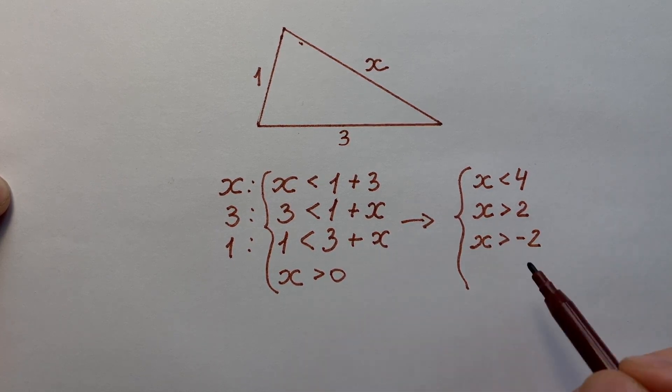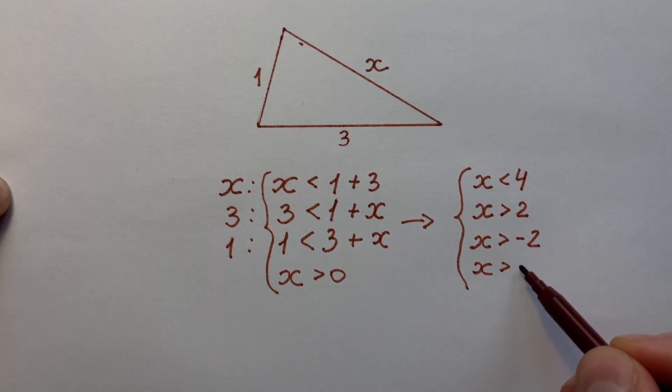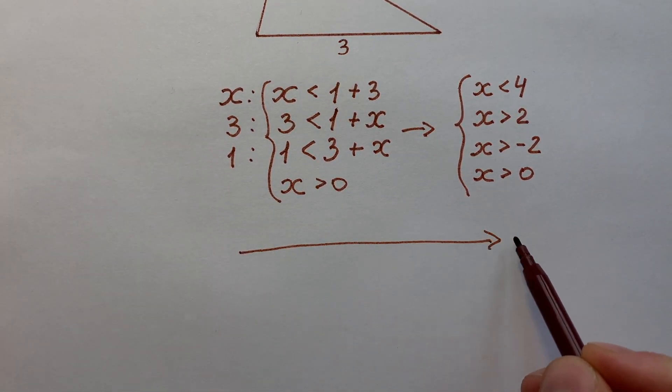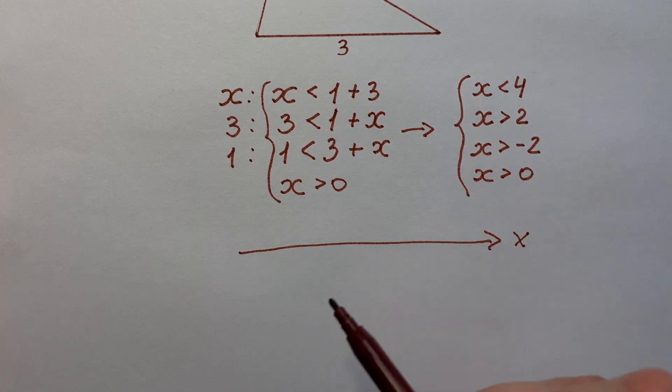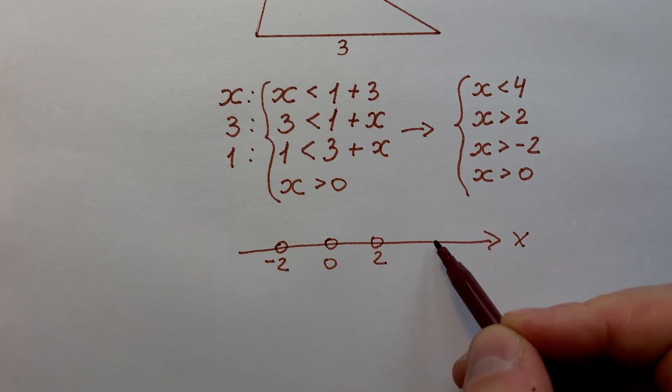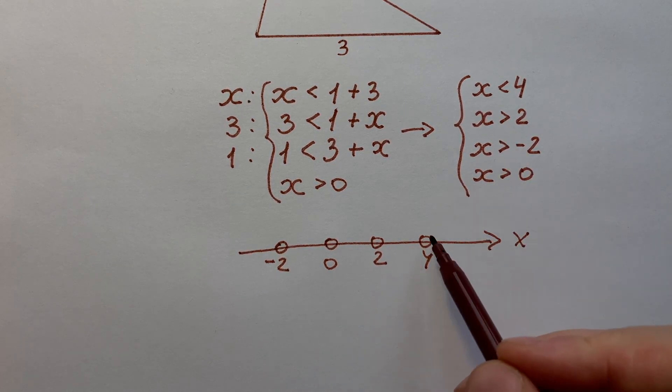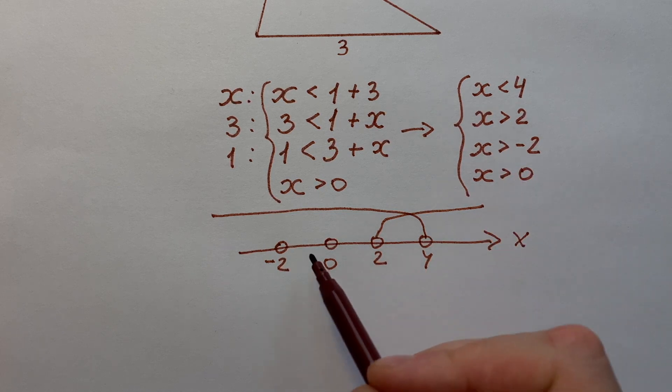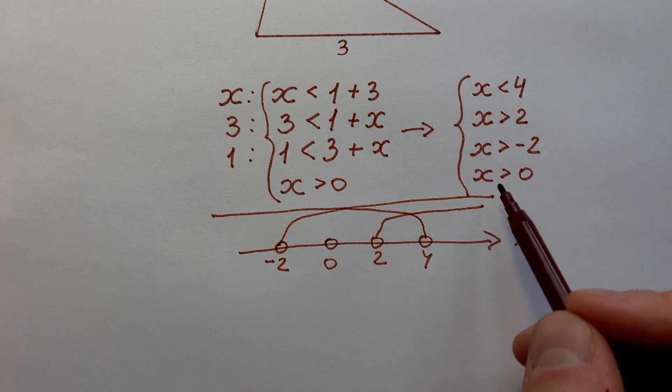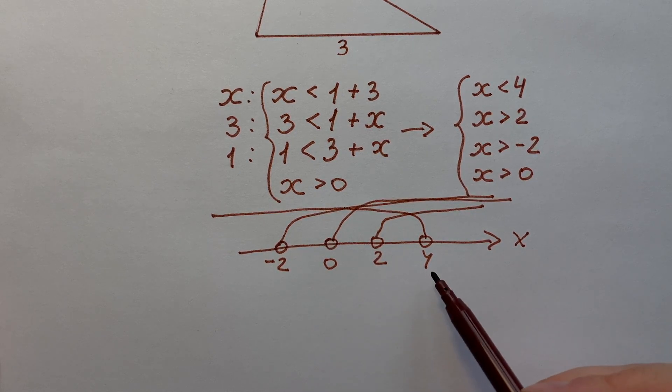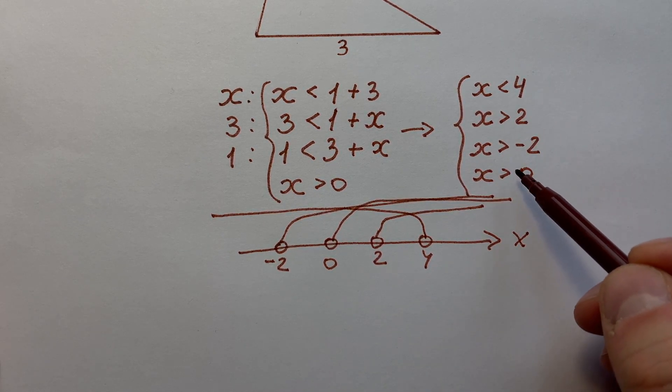And the last one x is bigger than zero. Now let's draw a number line x and draw our solutions there. We have four points: x is less than 4, x is bigger than 2, x bigger than minus 2, and x is bigger than zero.